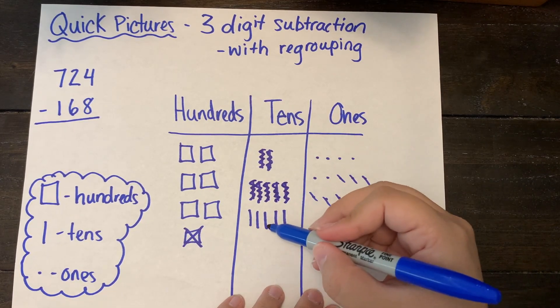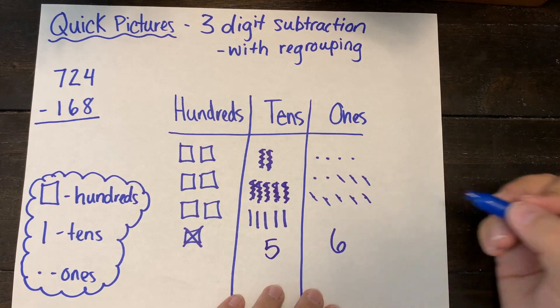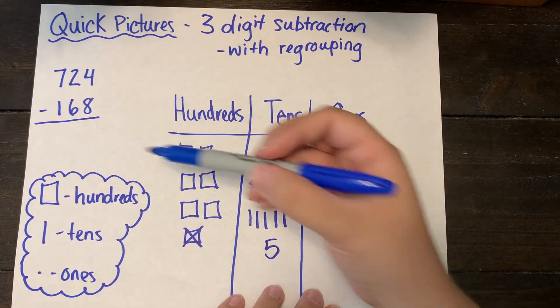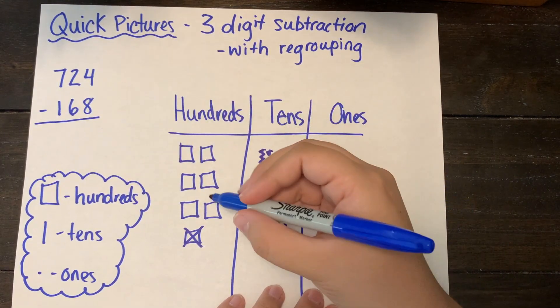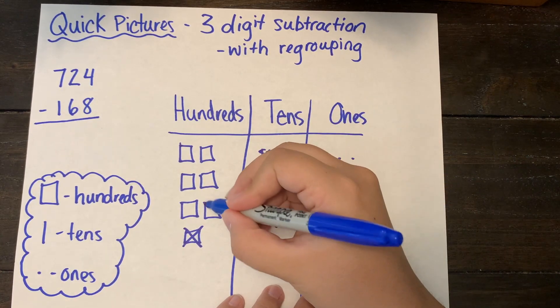After I take six tens away I am left with five tens. Now I have enough hundreds to take one hundred away so I'm just going to take one away by crossing it out.